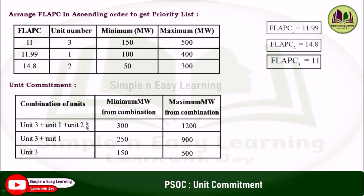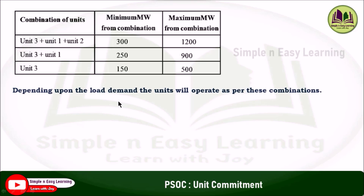The unit commitment combines units based on priority. Combination 1: unit 3 + unit 1 + unit 2, with minimum 300 MW and maximum 1200 MW. Combination 2: unit 3 + unit 1, leaving out the least priority unit 2. Combination 3: unit 3 alone, with its minimum and maximum limits. This unit commitment table determines which units operate based on load demand.